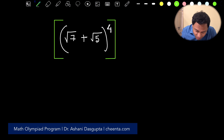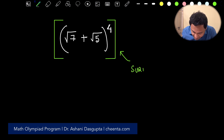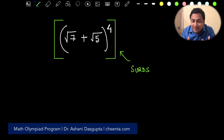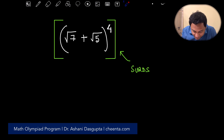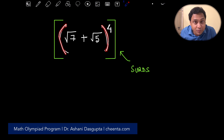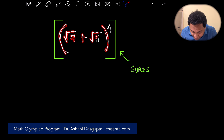We will learn about how to understand SIRDS — expressions containing square roots. In particular, we will use this problem from the Singapore Math Olympiad: find the value of (√7 + √5) raised to the power four.